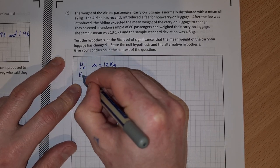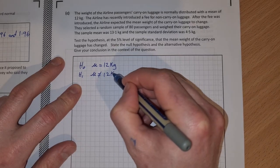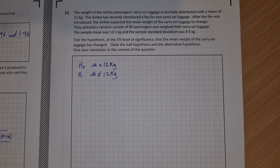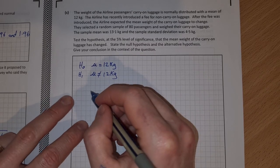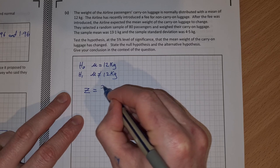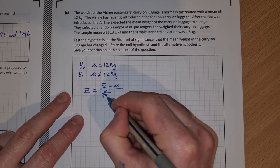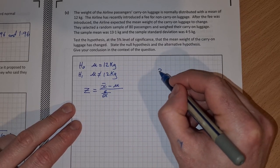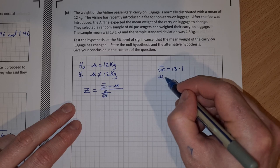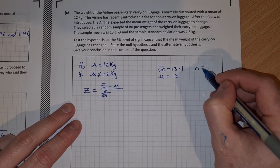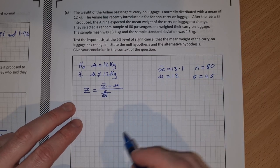And the alternative hypothesis H1 is that the mean has changed and it's not equal to 12 kg. To do the hypothesis test, we're going to calculate our z-score for this sample. Z equals x-bar minus mu over sigma over root n. In this case, x-bar is our 13.1 kg, mu is our mean, that's 12 kg, n is 80, that's the sample, and sigma was the standard deviation which was 4.5. So we can fill all them in here. Z equals x-bar minus mu, so that's 13.1 minus 12 over sigma which is 4.5 over root n which is 80.